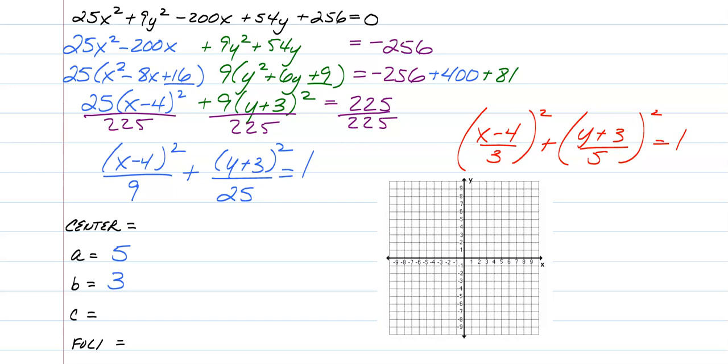So, how do we find c? The formula for c, as mentioned above, is c² = a² - b². So, c² = 25 - 9. So, c² = 16. So, c = 4. Now, what c represents is how far away from the center your foci are.